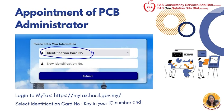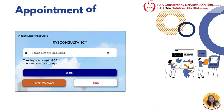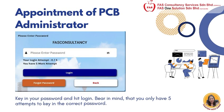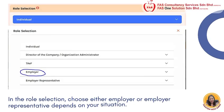Appointment of PCB administrator. First, login to MyTax at hddpsmytax.hassle.gov.my. Then select identification card number, key in your IC number and hit submit. Key in your password and hit login. Bear in mind that you only have 5 attempts to key in the correct password. In the role selection, choose either employer or employer representative depending on your situation.